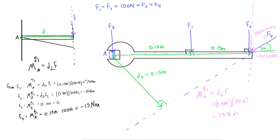So a force on an angle causes less moment than one acting purely perpendicular — F2 causes 30 newton meters, but F4 at this angle only causes 15 newton meters. To have the biggest moment, you want the force acting perpendicular to the distance from the point. If any component points through the point, we can ignore it. Both methods — using d_perp with the full force, or using the full distance with just the perpendicular force component — give the same answer of negative 15 newton meters.